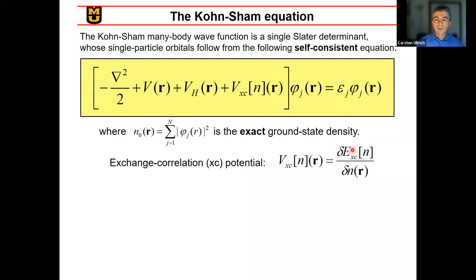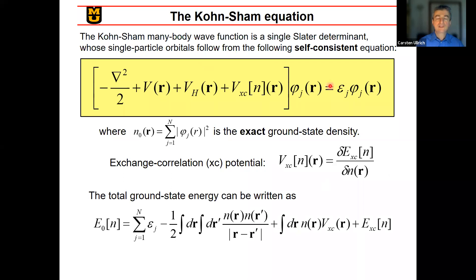Once you are done solving all this — for example, you've finished running Quantum ESPRESSO or whatever code you have — you can calculate the total ground-state energy. There's a formula: you get it from the epsilons, plus a Coulomb interaction term and two terms that depend on exchange and correlation. If you knew what the exact functional was, then the ground-state energy would be exact. But the problem is we don't know what the exchange-correlation functional is.